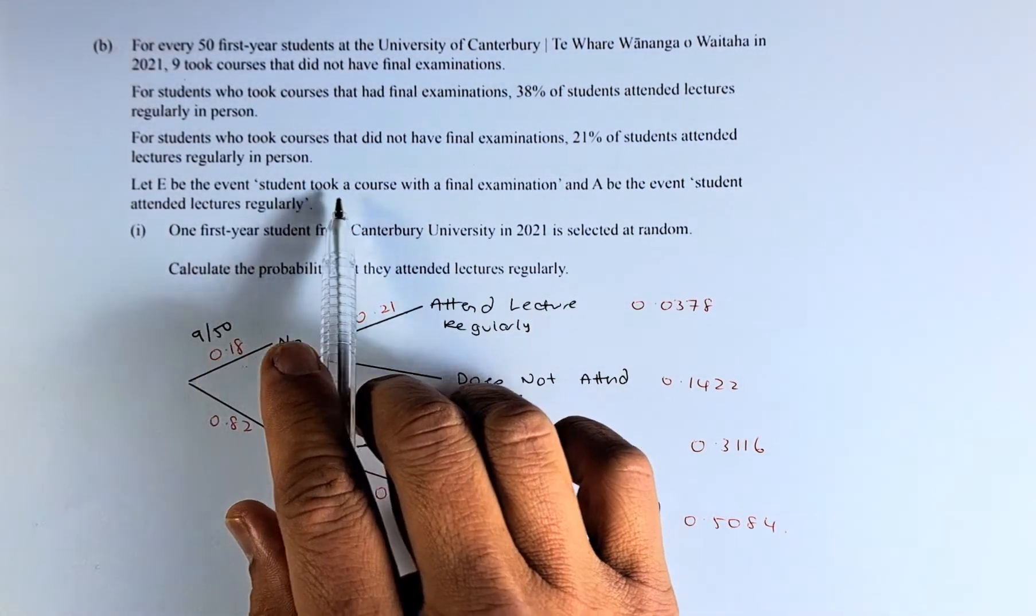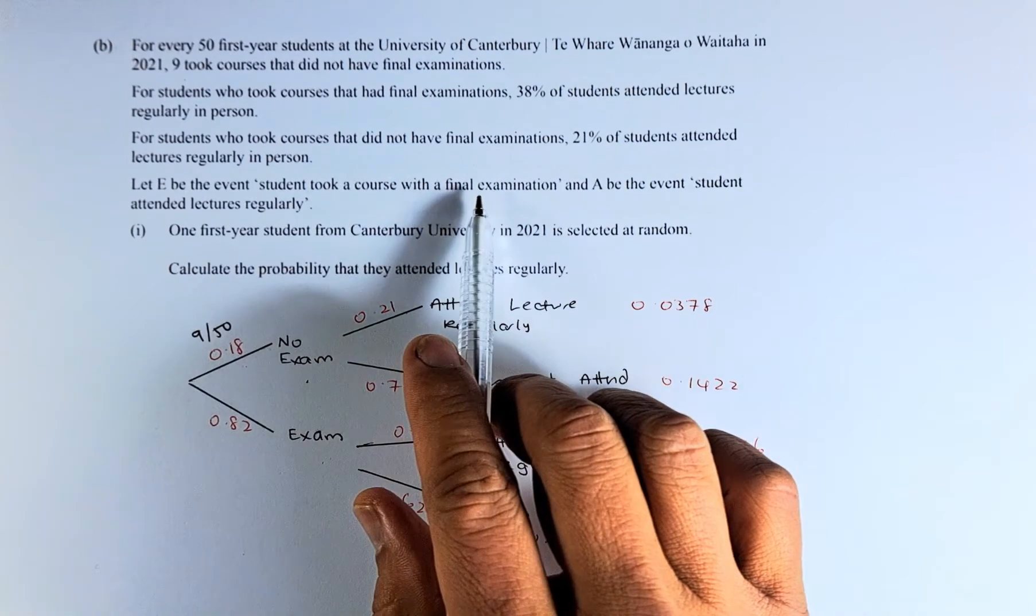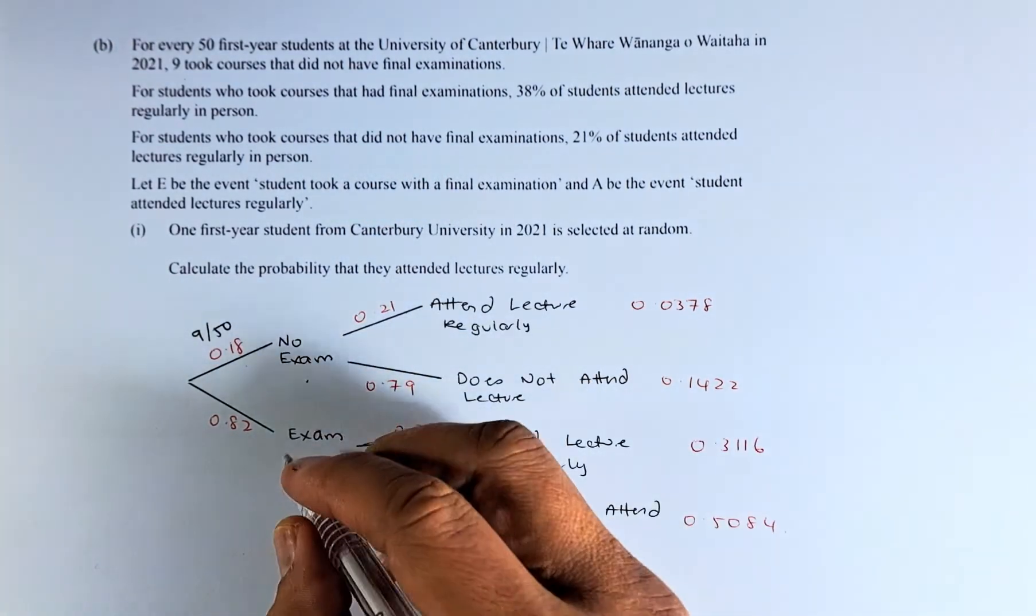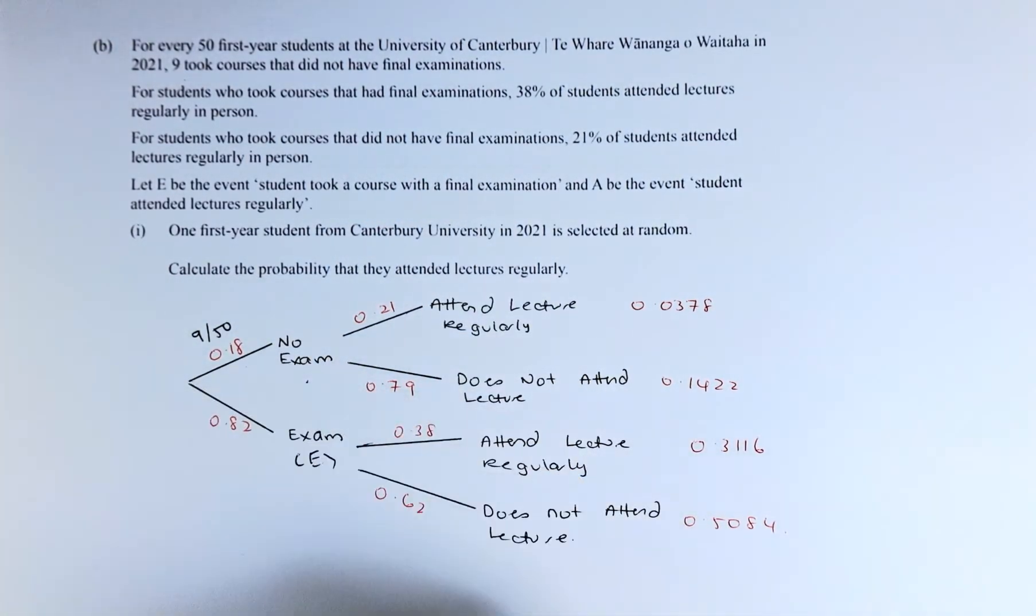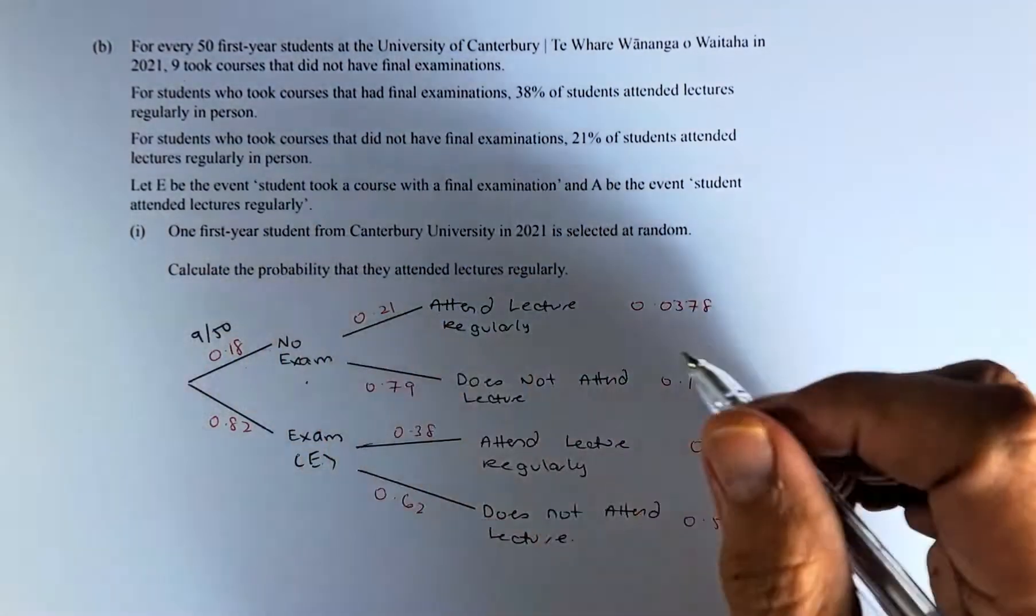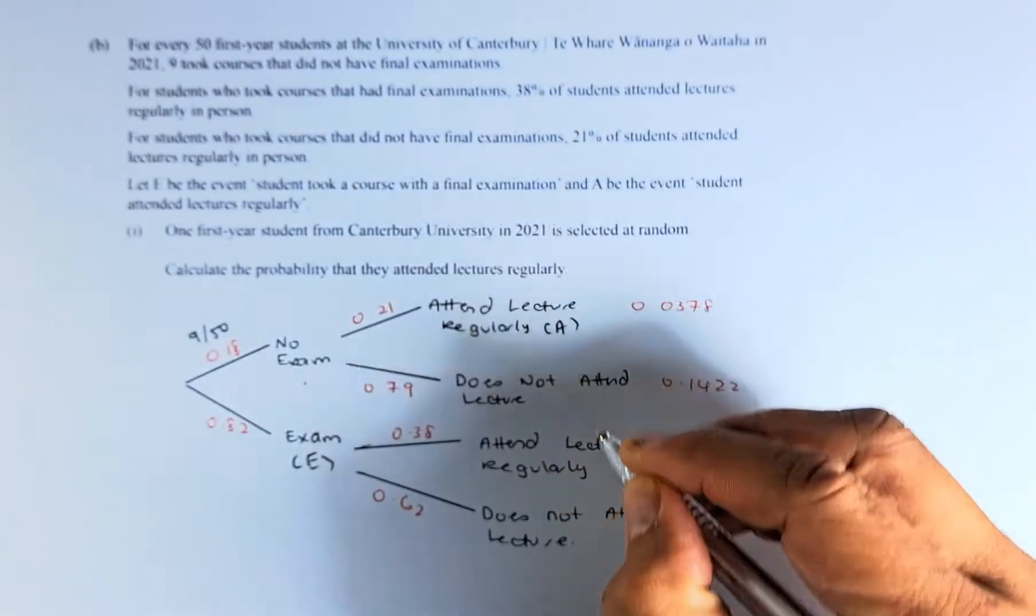Let E be the event that students took a course with final examination, so we let it be represented by E. And A be the student who attended regularly, so attend regularly is represented by A.